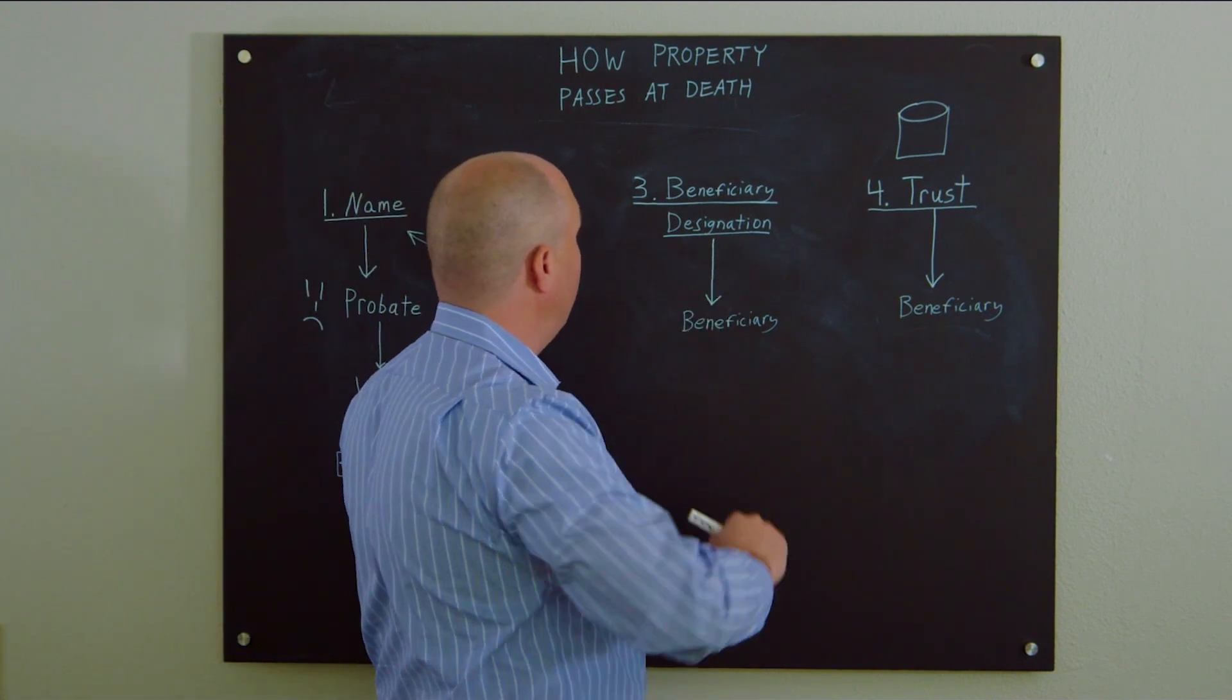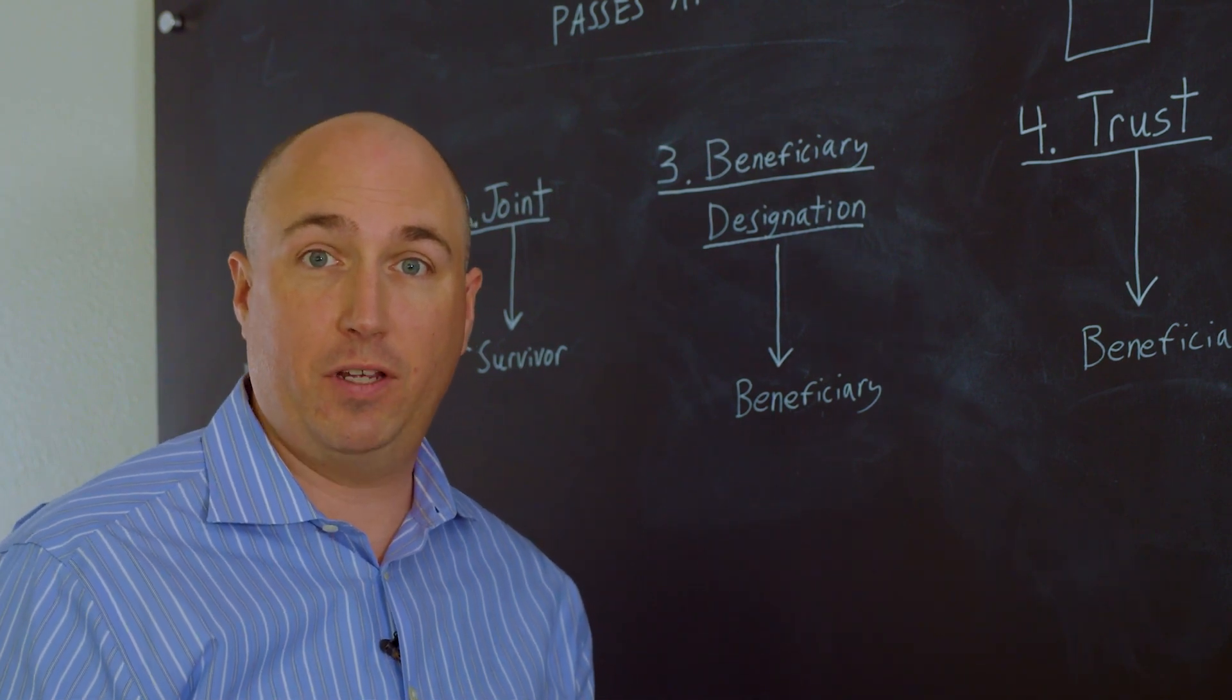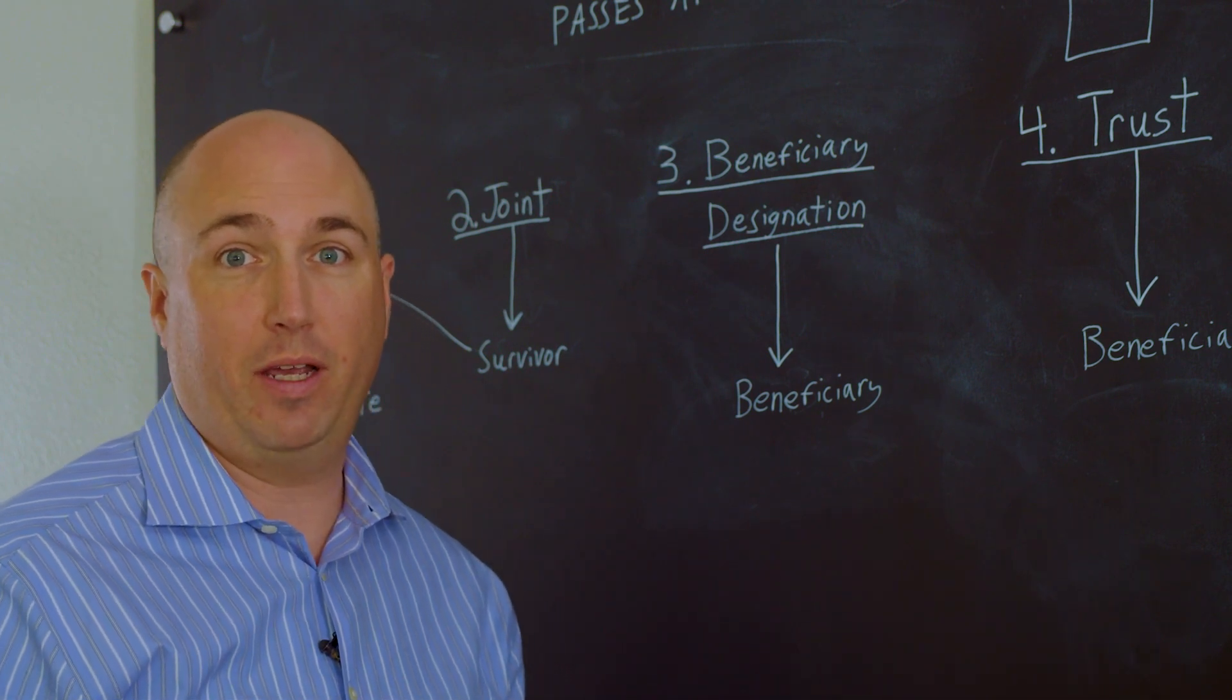Category three here, beneficiary designations. Anything you own that has a beneficiary designation on it will pass directly to the named beneficiary free of probate.